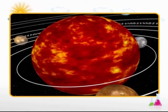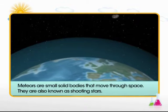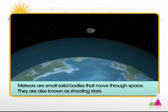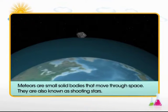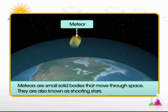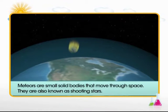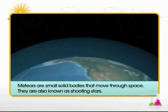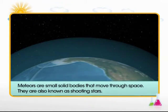Meteors are small solid bodies like small rocks or pieces of dust that move through space. If these burn up in the atmosphere of a planet, they are known as meteors or shooting stars. Unburnt pieces falling through the atmosphere are known as meteorites.